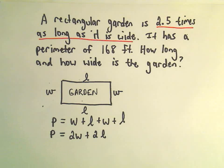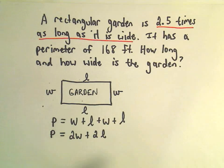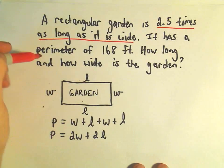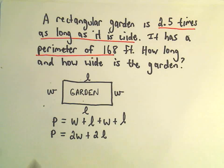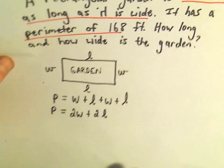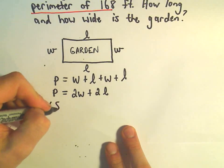But, again, we still have a little bit more information. Again, we know that it's 2.5 times as long as it is wide. We also know that the perimeter is 168 feet. Well, so on the left side, the P, that's again the perimeter, we can simply plug in the perimeter is 168.